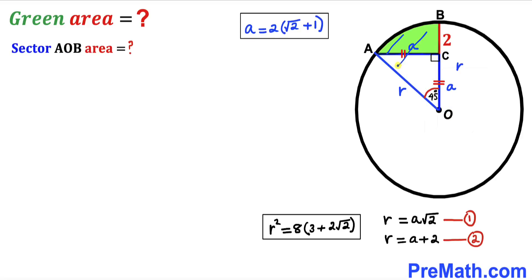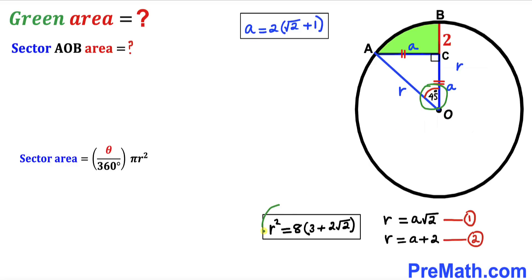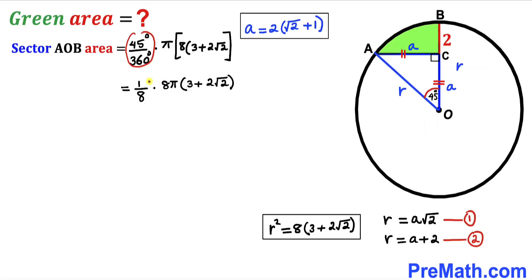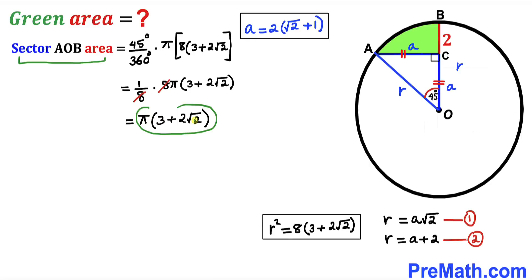Now let's calculate the area of sector AOB. The sector area formula is: Area = (θ/360°) × πr². With θ = 45° and r² = 8(3 + 2√2), we get: (45/360) × π × 8(3 + 2√2) = (1/8) × π × 8(3 + 2√2). The 8s cancel, so sector AOB area = π(3 + 2√2).